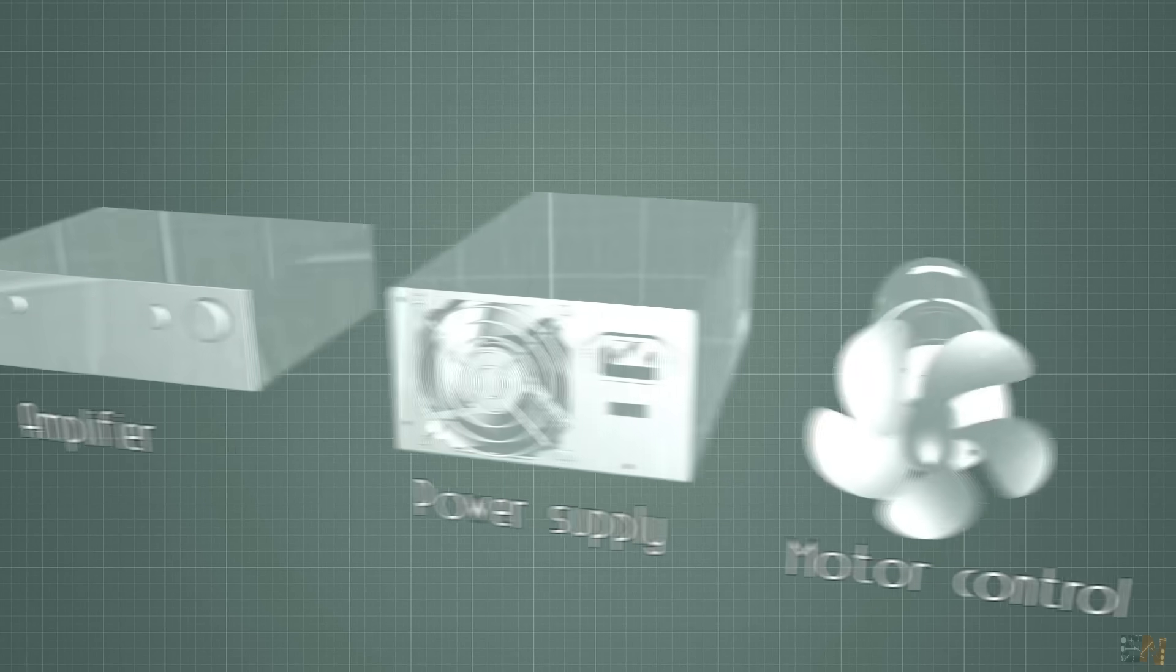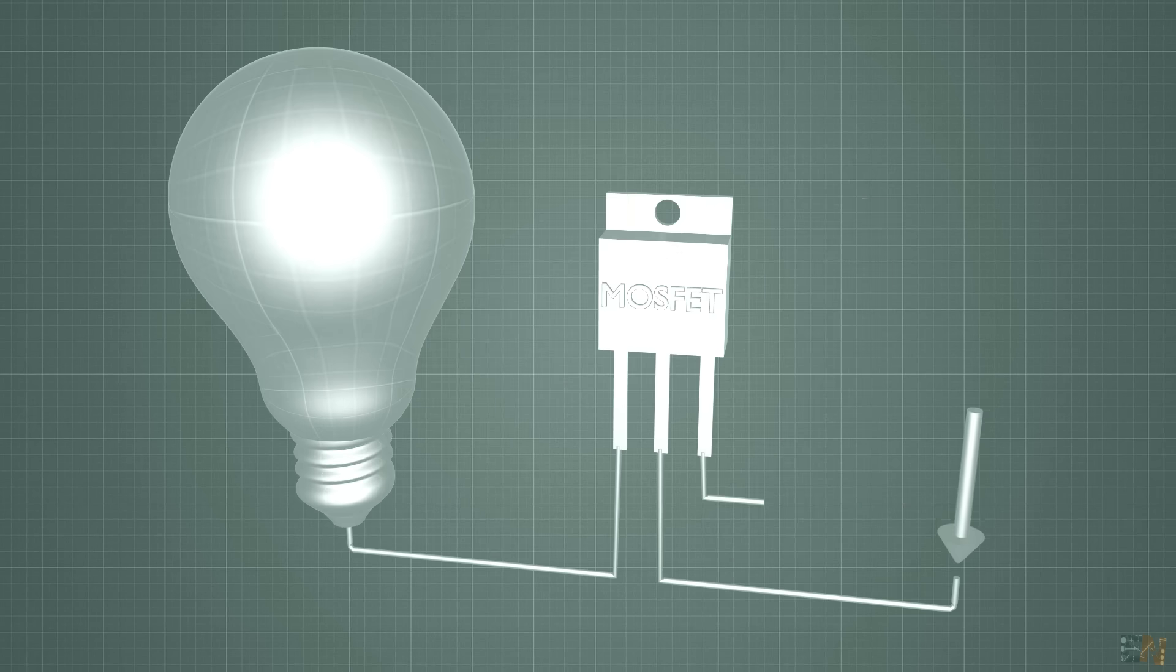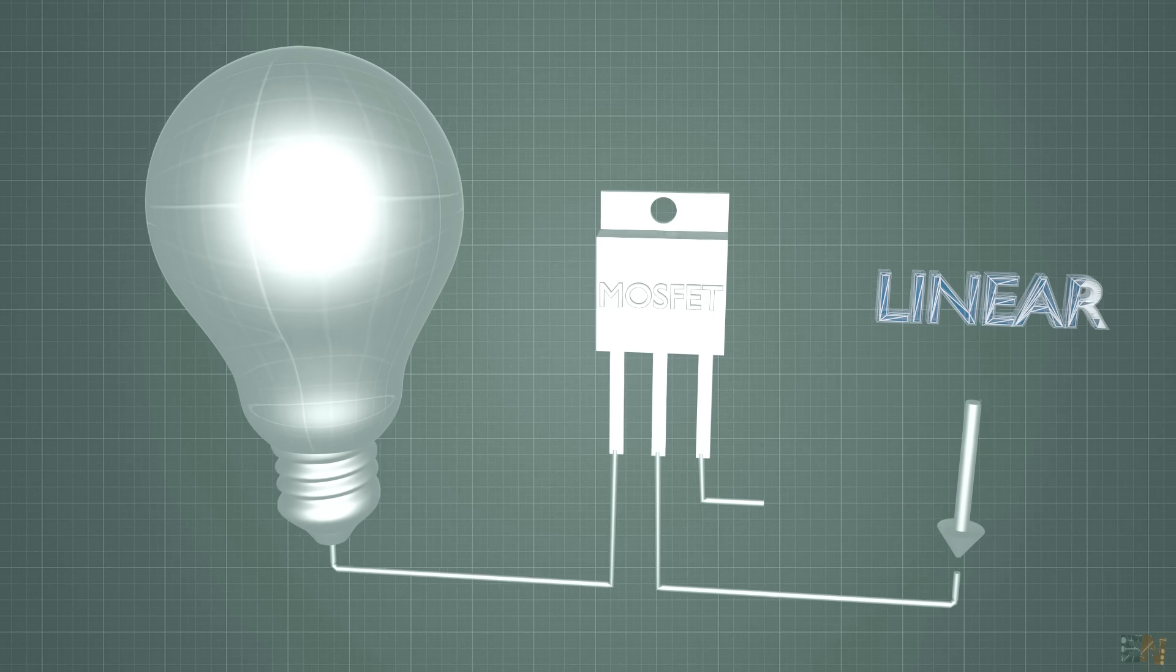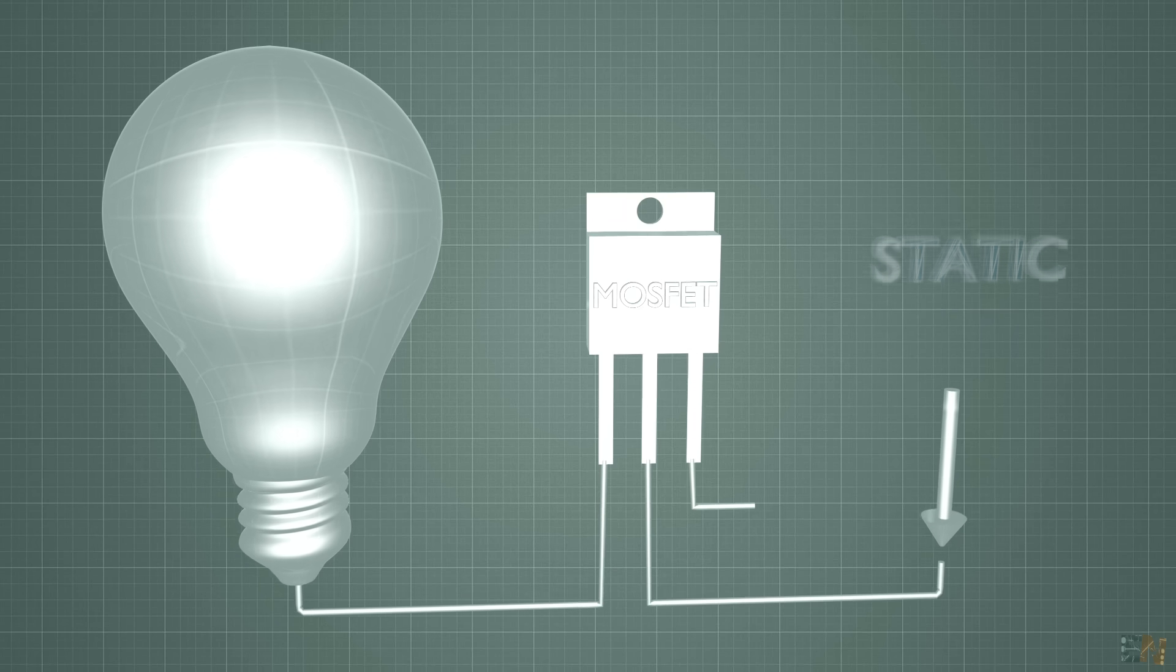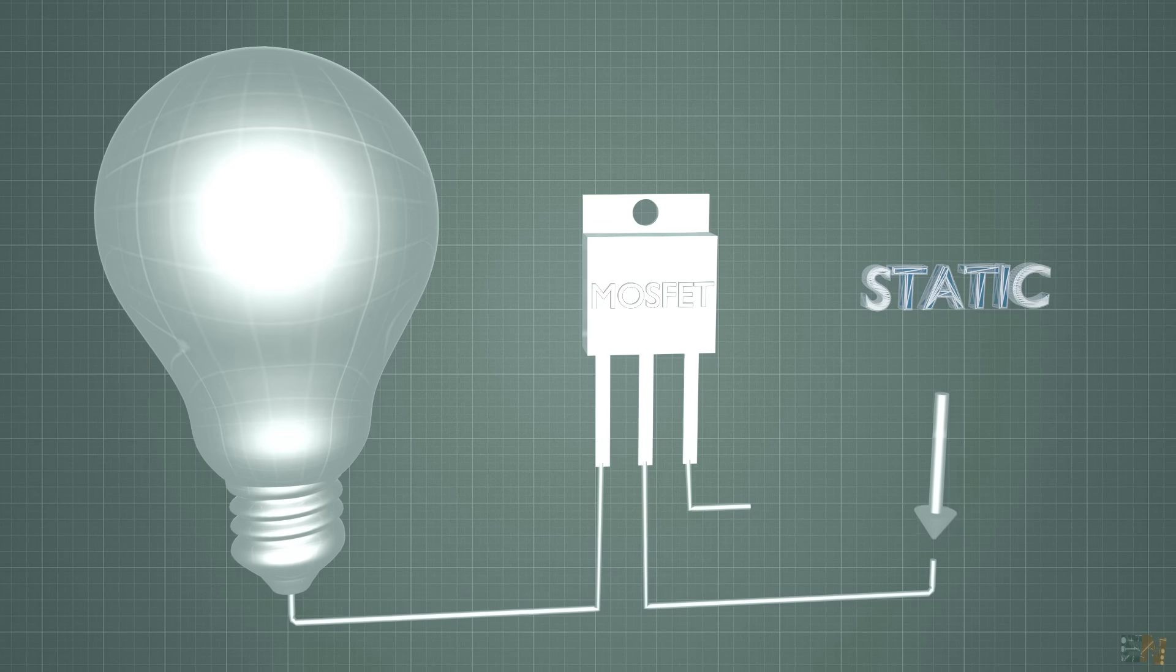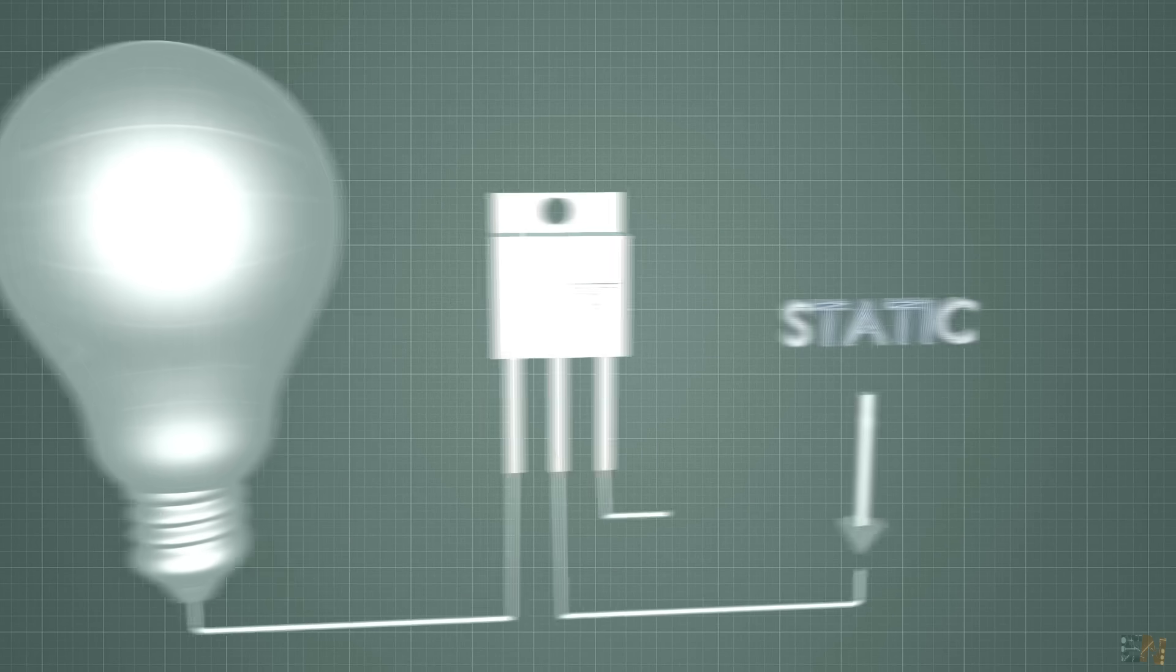At the same time, the load power modulation technique will also affect. For example, it could be a linear control, a switching mode and a static one and also the frequency will also affect. So for that we need to take a look on how each of these components will work.